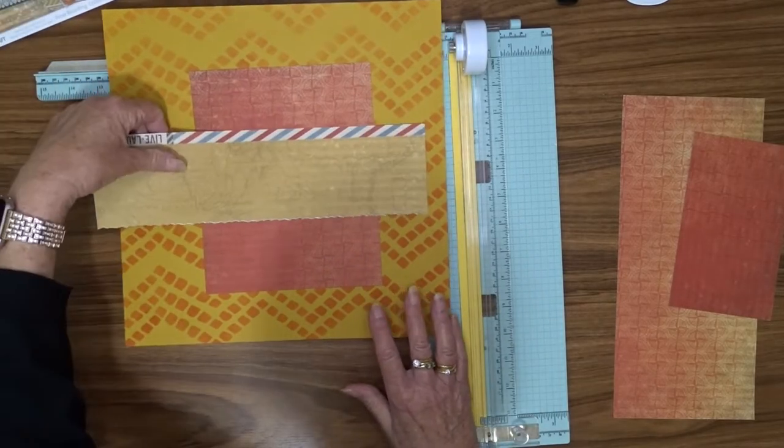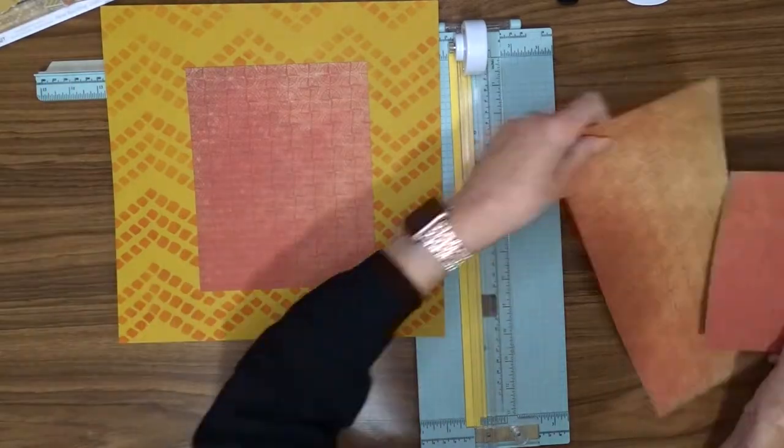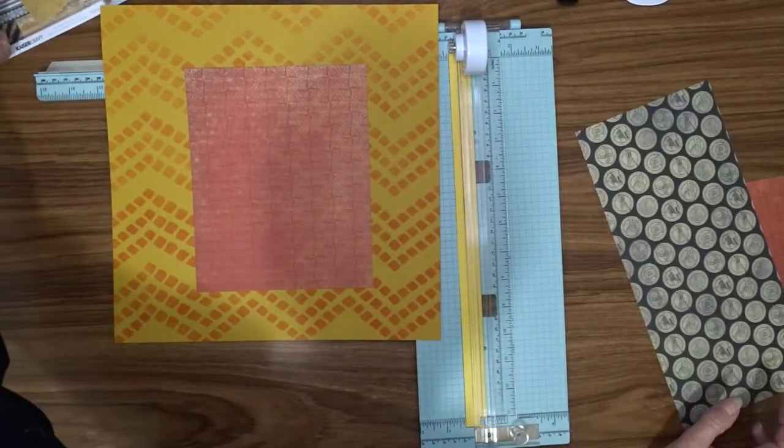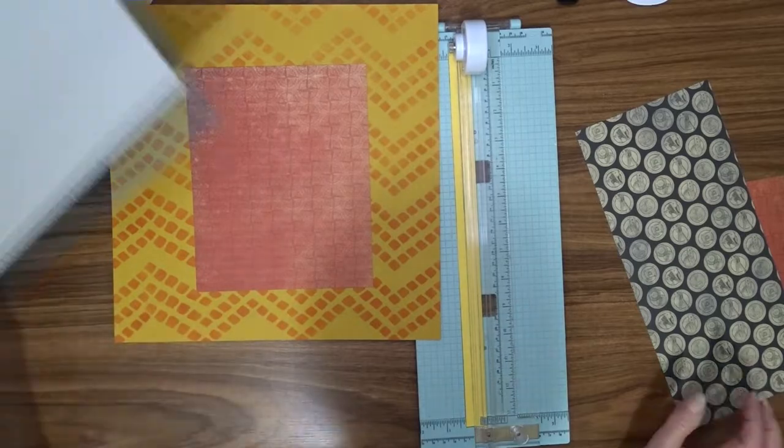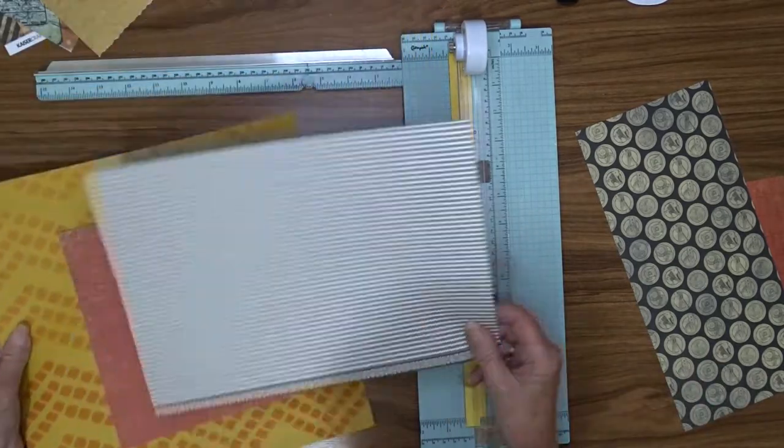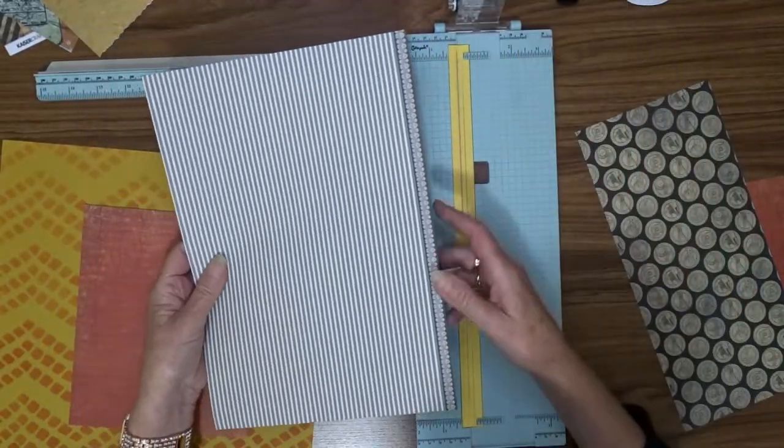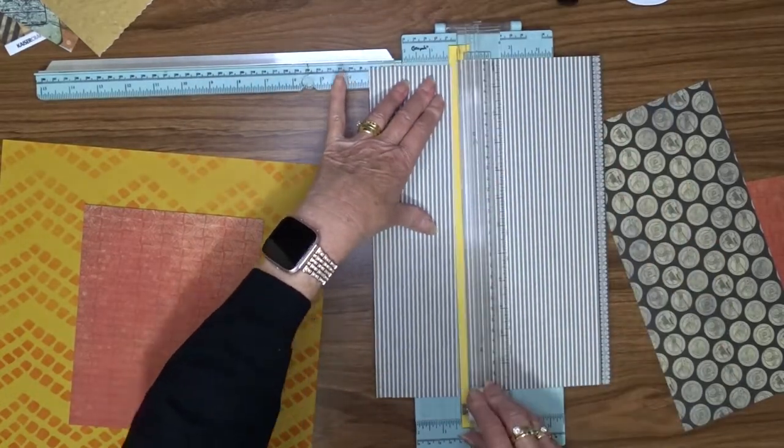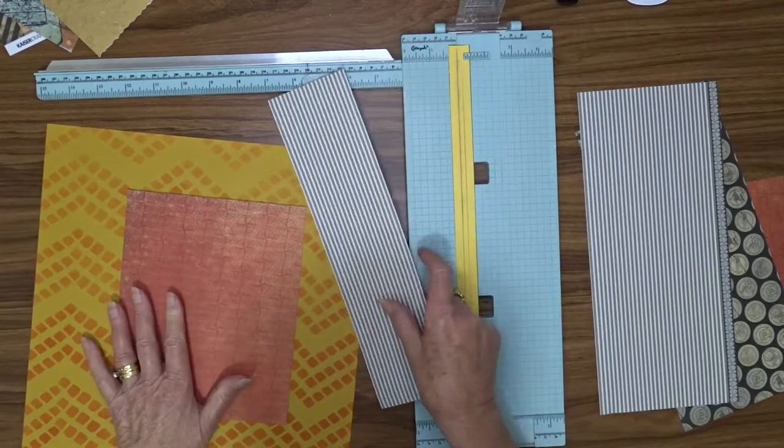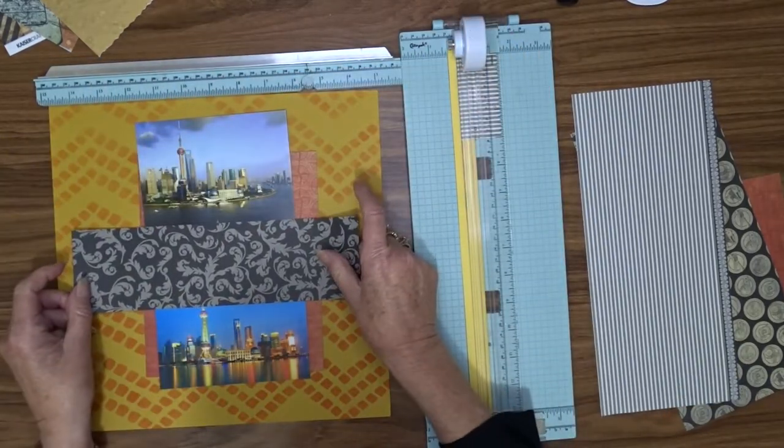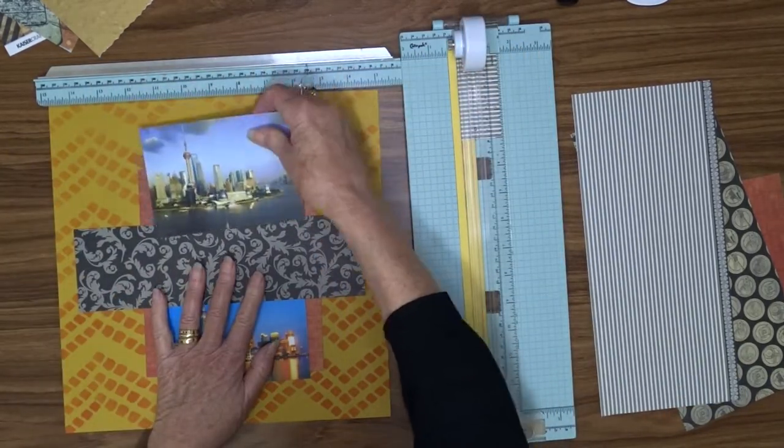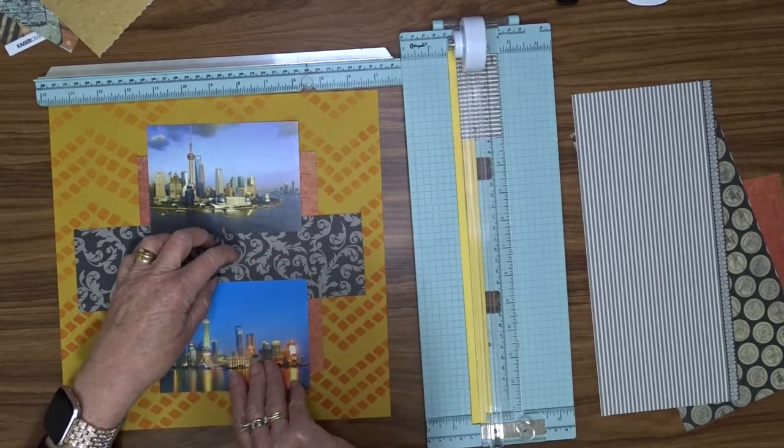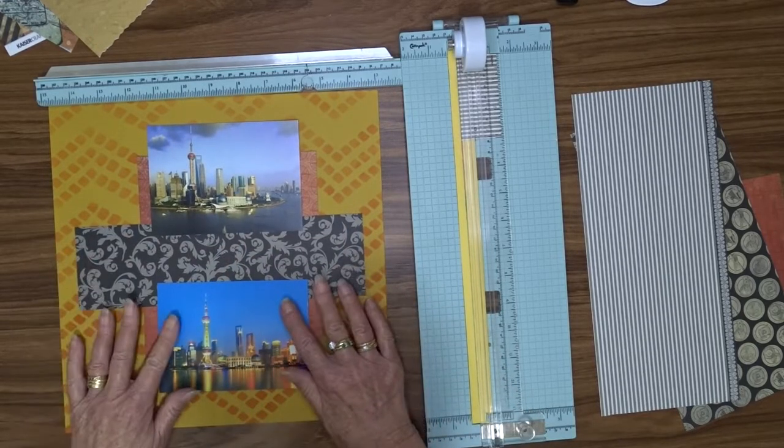I auditioned a couple of yellow cardstocks or pattern papers to put across here, but they didn't stand out enough, so I decided to go with Kaiser Craft After Five. The name of the paper is Corsage—it's a striped paper, grey and white, and it stands out nicely from the background. I cut this piece three inches by ten and a half inches. I thought about using the dark side of that pattern paper but decided it was too heavy.